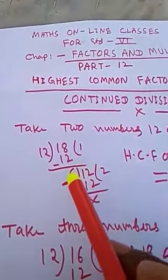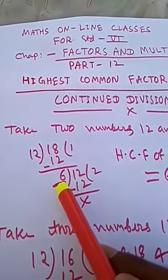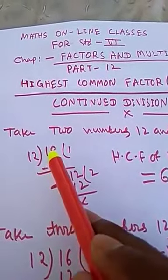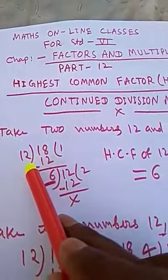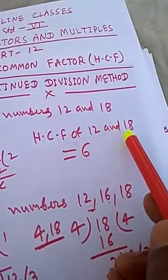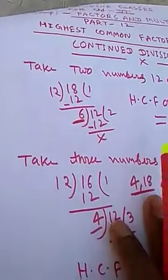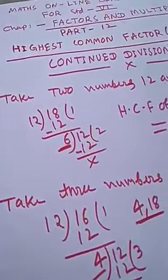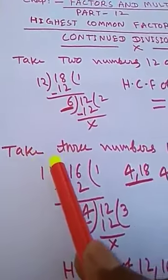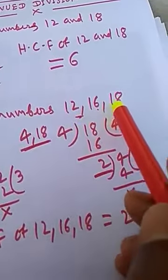So here, 12 divided by 6 is 2 times, and the remainder is zero. So the last divisor is 6, and 6 is the HCF of 18 and 12. Therefore, the HCF of 12 and 18 is 6.